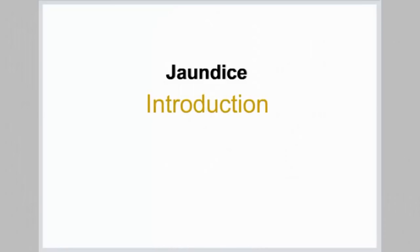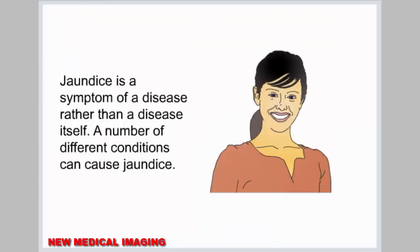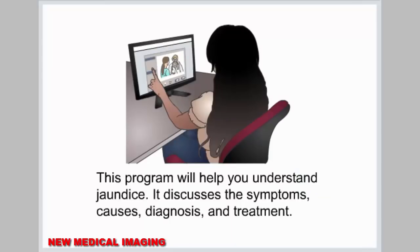Jaundice. Introduction. Jaundice causes your skin and the whites of your eyes to turn yellow. Too much bilirubin causes jaundice. Bilirubin is a yellow chemical in hemoglobin, the substance that carries oxygen in your red blood cells. Jaundice is a symptom of a disease rather than a disease itself. A number of different conditions can cause jaundice. This program will help you understand jaundice — its symptoms, causes, diagnosis, and treatment.